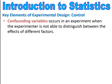Some key elements of experimental design for control. The first element is confounding variables — this occurs in an experiment when the experimenter is not able to distinguish between the effects of different factors. When you're doing a study and you have different factors such as blood pressure, diabetes, and weight, there are many factors going into the experiment, and you don't know which one is really causing the effect. So you don't want to have too many variables when you're doing a study.